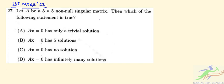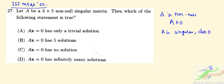Question number 27 says: let A be a 5×5 non-singular matrix. We are told A is not invertible, meaning A is singular, so the determinant of A is equal to 0. There exists X not equal to 0 in R5, and we have to find how many solutions AX = 0 will have.